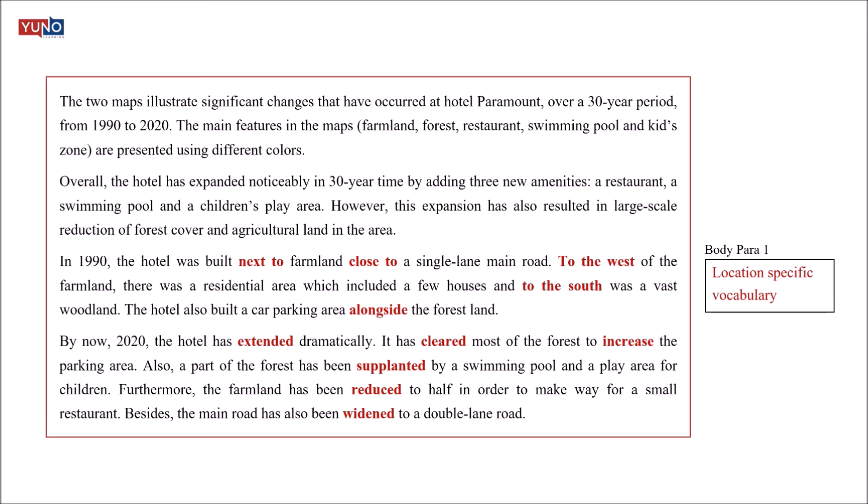The next point is to use a wide range of appropriate vocabulary. You'll need to use specific vocabulary in the map task to express where things were positioned in the past and how things have changed or remain the same presently. In body paragraph one, notice the words 'next to,' 'close to,' 'to the west,' 'alongside' — all these help in describing the locations of things on the map. In body paragraph two, change-specific vocabulary is used: 'hotel has extended,' 'cleared forest to increase parking area,' 'supplanted by a swimming pool,' 'farmland has been reduced to half,' 'road has been widened.' Start familiarizing yourself with such location and change-specific vocabulary to get a higher band score.